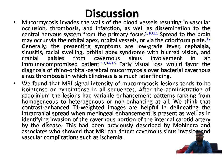Discussion: Mucormycosis invades the walls of blood vessels, resulting in vascular occlusion, thrombosis, and infarction, as well as dissemination to the central nervous system from the primary focus. Spread to the brain may occur via the orbital apex, orbital vessels, or via the cribriform plate.